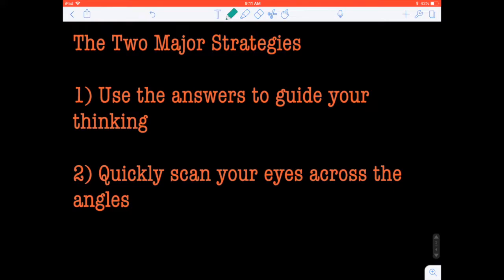Now there's a couple key strategies here that's going to make this section a heck of a lot easier for you. And the first one is to use the answers to guide your thinking. What I mean by this is that instead of looking at the angles first when you come across a question, go right to the answers. Because a lot of the times the answers are going to reveal a lot of information to you, such as some answer sets might only have one or two angles being the smallest angle.